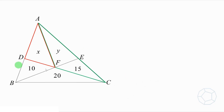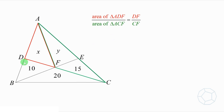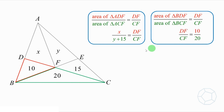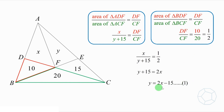Let's look at the red triangle ADF and the green triangle ACF. The ratio of the areas is equal to the ratio of the bases DF over CF. Therefore, X over (Y plus 15) is equal to DF over CF. Another pair of triangles with these same two bases is the red triangle BDF and the green triangle BCF. Therefore, DF over CF is equal to 10 over 20, which is equal to 1/2. Putting these two equations together and cross-multiplying to rearrange terms, we have Y is equal to 2X minus 15. Let's call this equation 1.